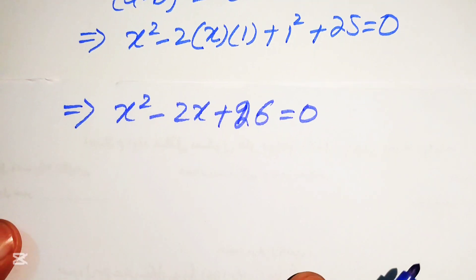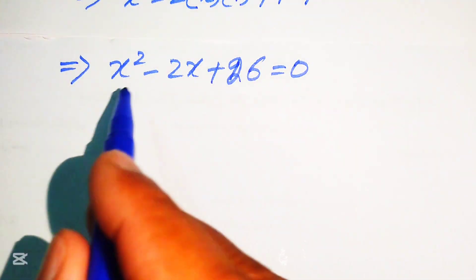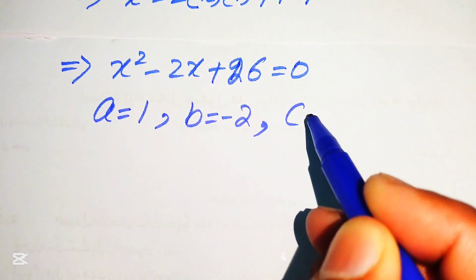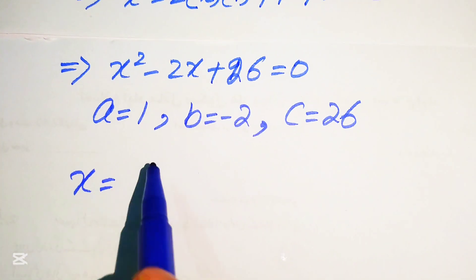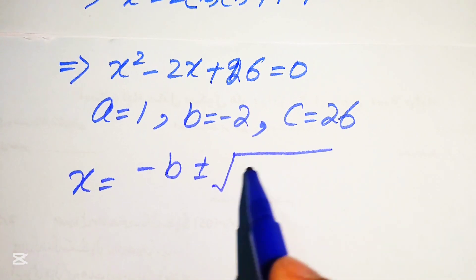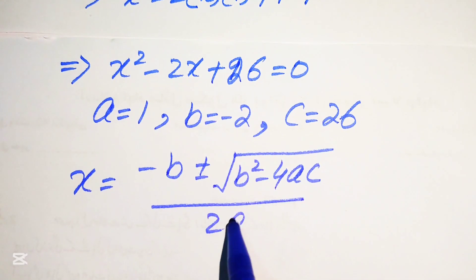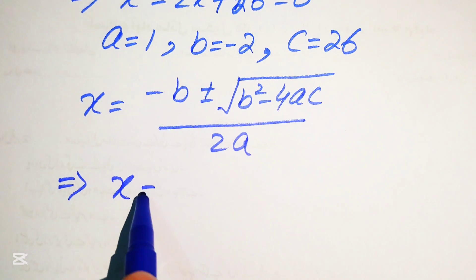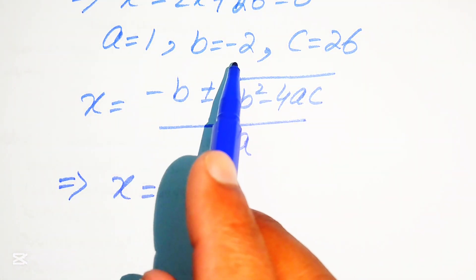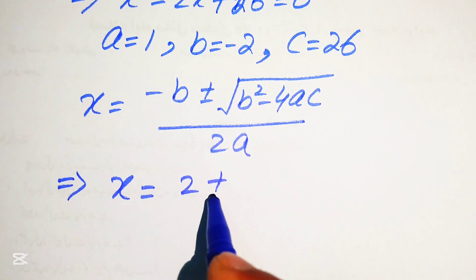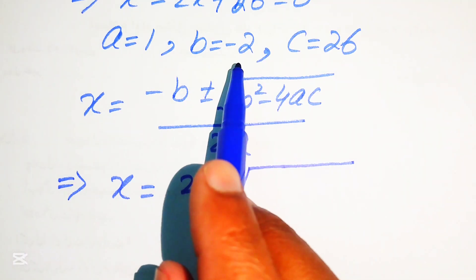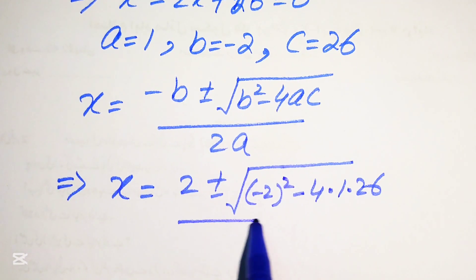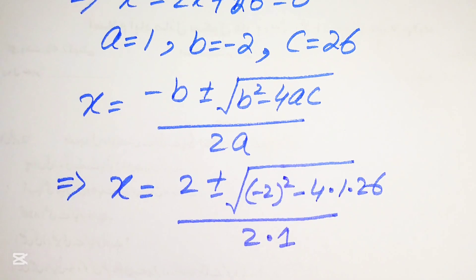This is a quadratic equation in x. We identify the coefficients: a = 1, b = -2, c = 26. The quadratic formula is x = (-b ± √(b² - 4ac)) / (2a). Substituting: x = (2 ± √((-2)² - 4·1·26)) / (2·1).